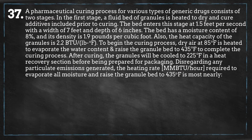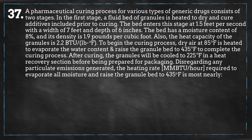A pharmaceutical curing process for various types of generic drugs consists of two stages. In the first stage, a fluid bed of granules is heated to dry and cure additives included prior to curing. The bed enters this stage at 1.5 feet per second with a width of 7 feet and depth of 6 inches. The bed has a moisture content of 8% and its density is 1.9 pounds per cubic foot.